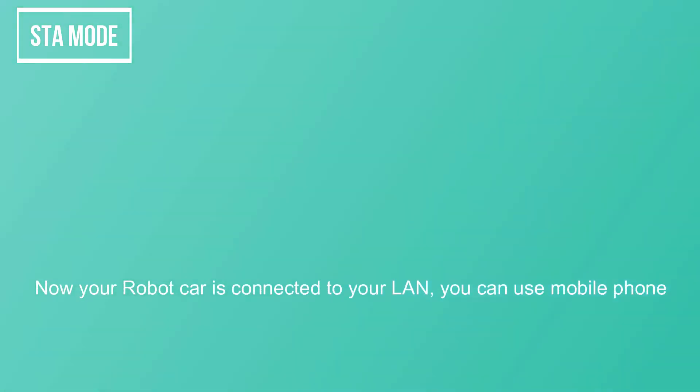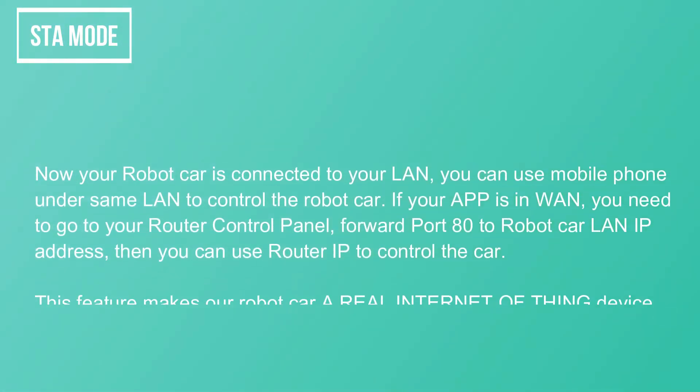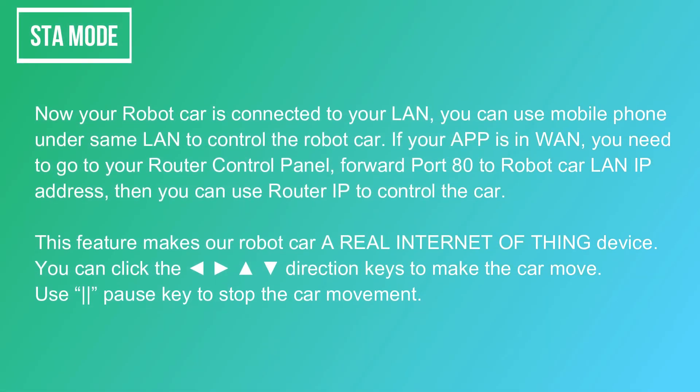Now your robot car is connected to your LAN. You can use a mobile phone on the same LAN to control the robot car. If your app is on WAN, you need to go to your router control panel and forward port 80 to the robot car's LAN IP address. Then you can use the router's IP to control the car, making it a real Internet of Things device.